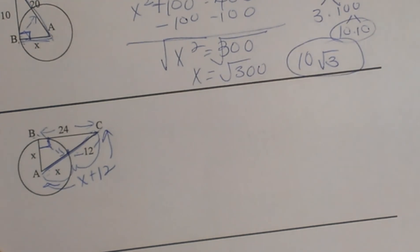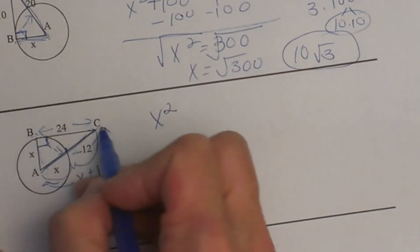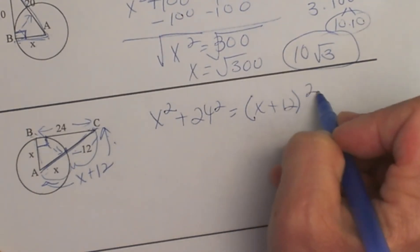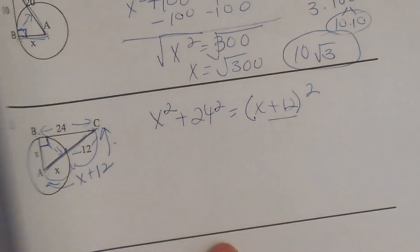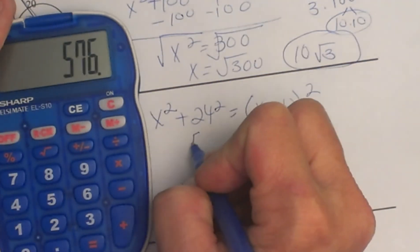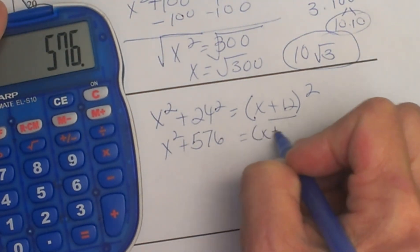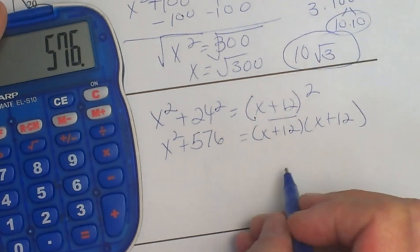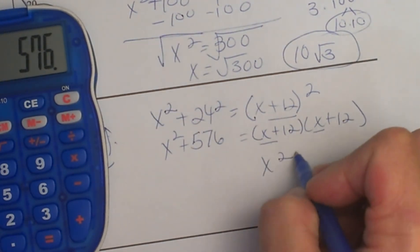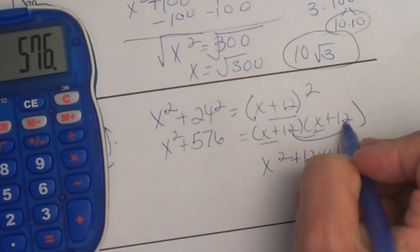Now let's use the Pythagorean theorem. Here is a leg, here is a leg, and here is the hypotenuse. So x squared plus 24 squared equals x plus 12 all squared. 24 times 24 is 576, so we have x squared plus 576 equals x plus 12 quantity squared. That is a FOIL problem, so I write out x plus 12 times x plus 12. First: x times x is x squared. Outer: x times 12 is 12x. Inner: 12 times x is another 12x. Last: 12 times 12 is 144.